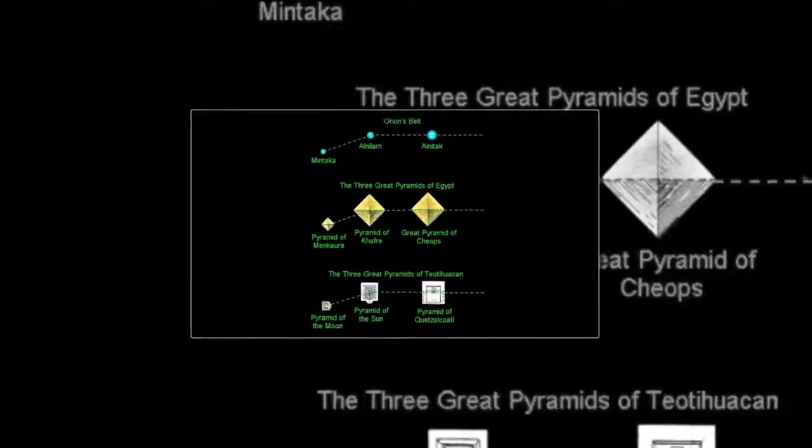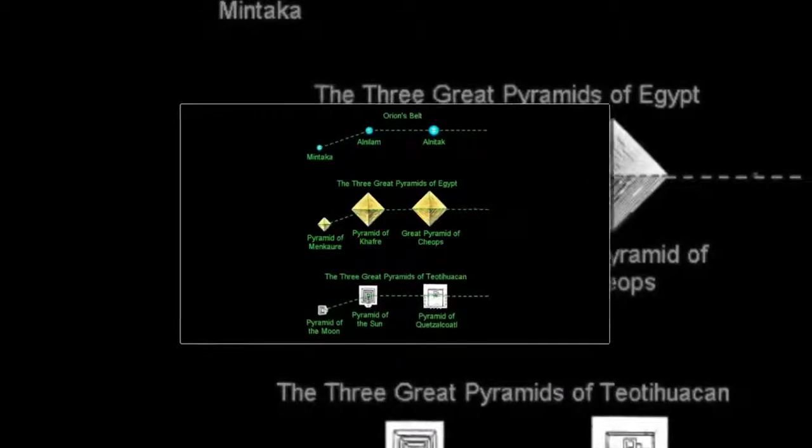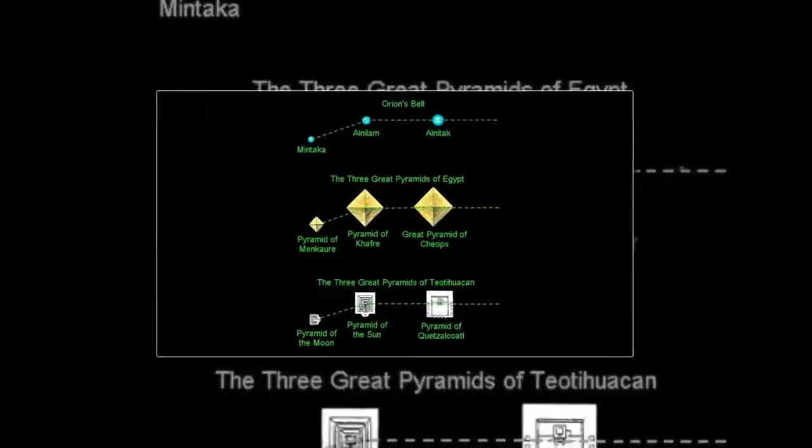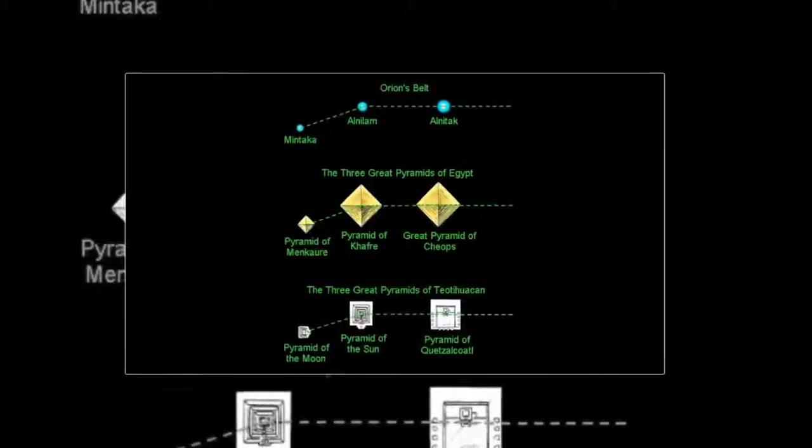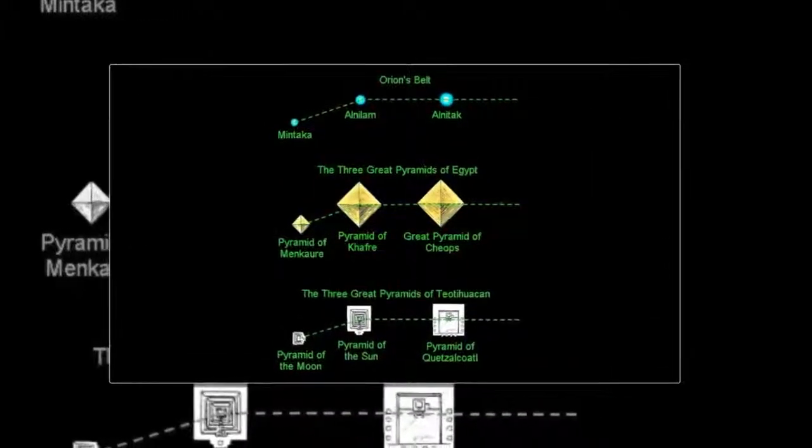We do know that Teotihuacan was one of the largest pre-Columbian cities in the Americas with an estimated population of around 200,000 people during its peak, meaning that it was among five of the largest cities in the world during its epoch.